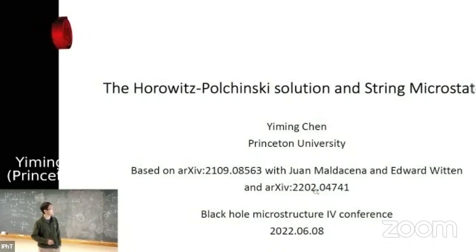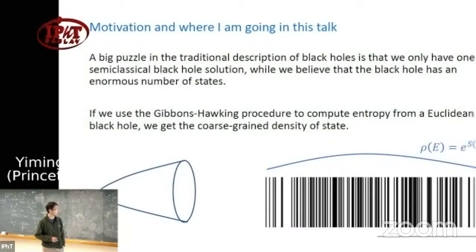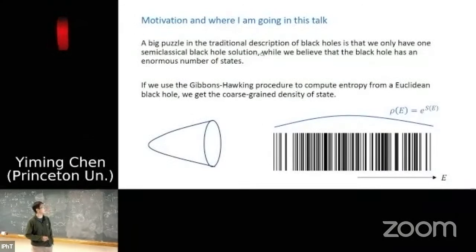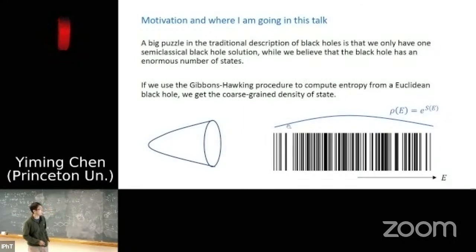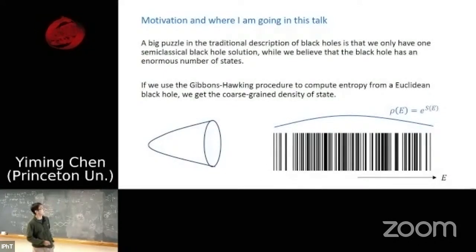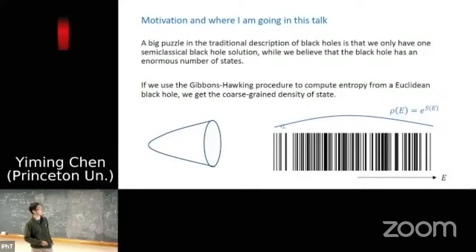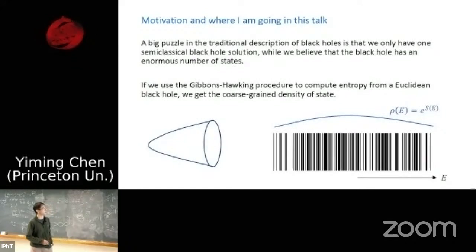Let me start with some motivation. A big puzzle in our traditional description of black holes is that we only have one black hole solution, while we believe that the black hole in the quantum mechanical theory is really describing an enormous amount of states. Here I'm drawing schematically all the microstates of the black hole — individual eigenvalues of the system. But if we use the Gibbons-Hawking procedure and the Euclidean black hole to compute the entropy, we just get the coarse-grained density of states, a smooth curve which doesn't reflect the underlying discreteness of the spectrum.